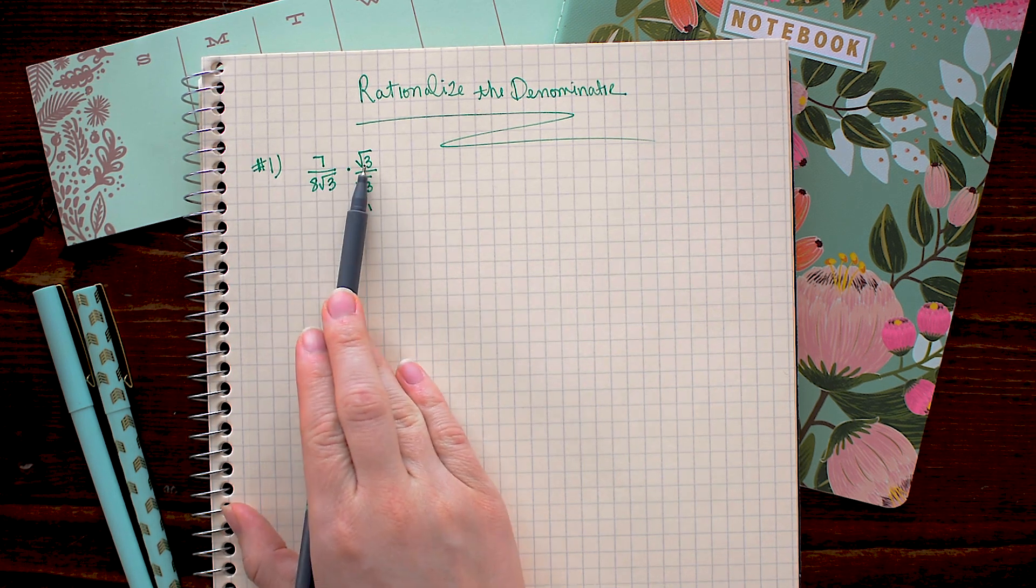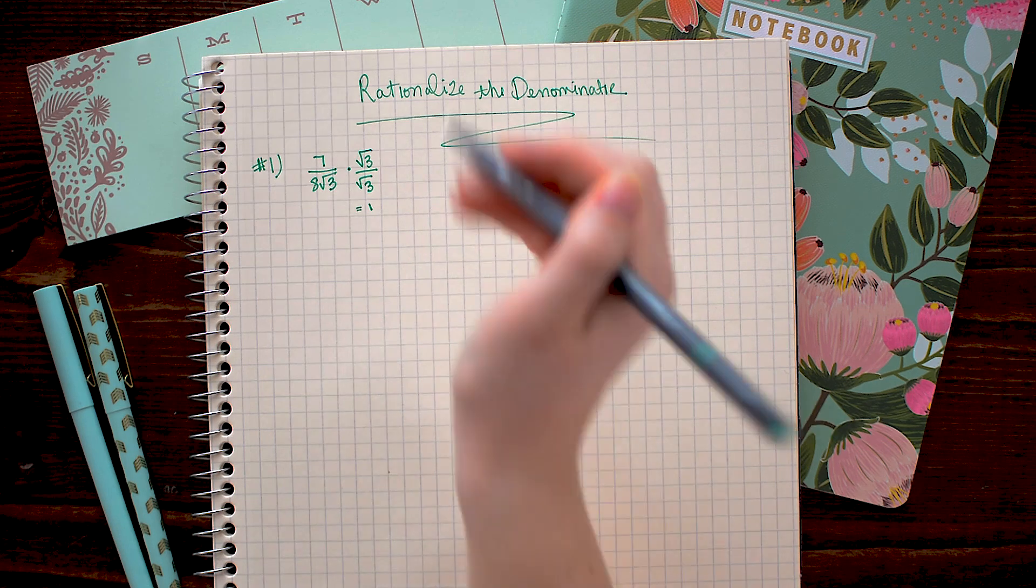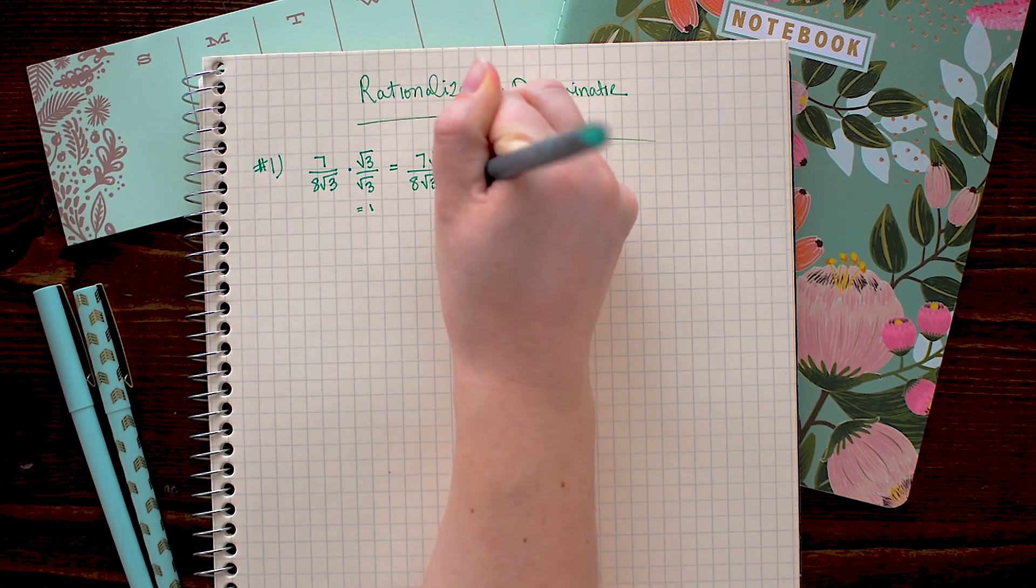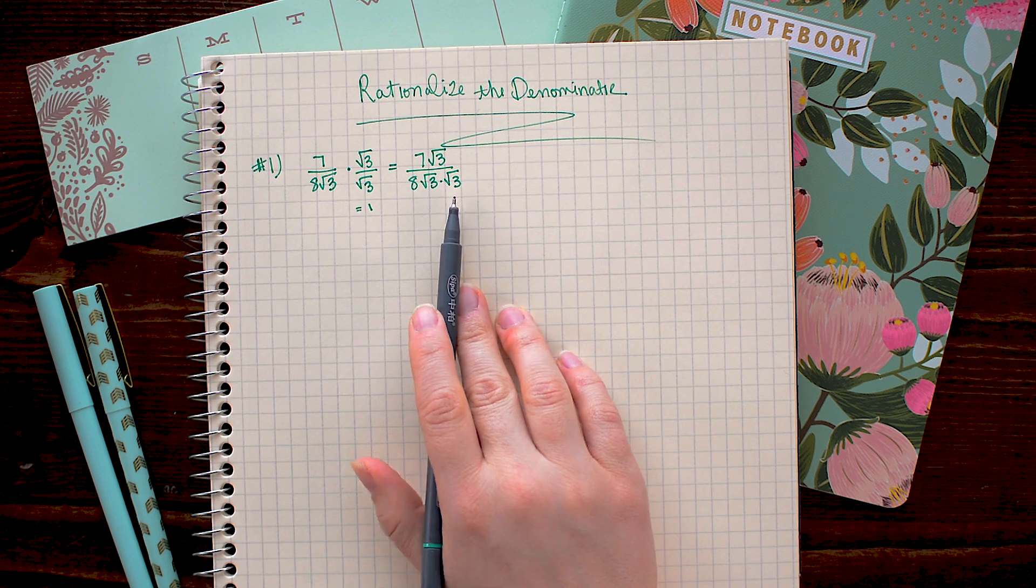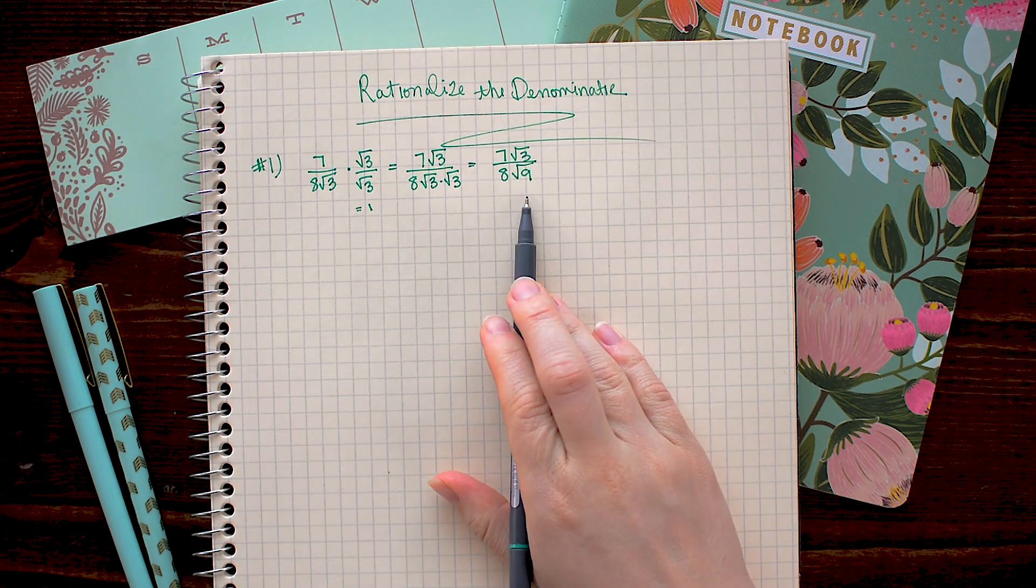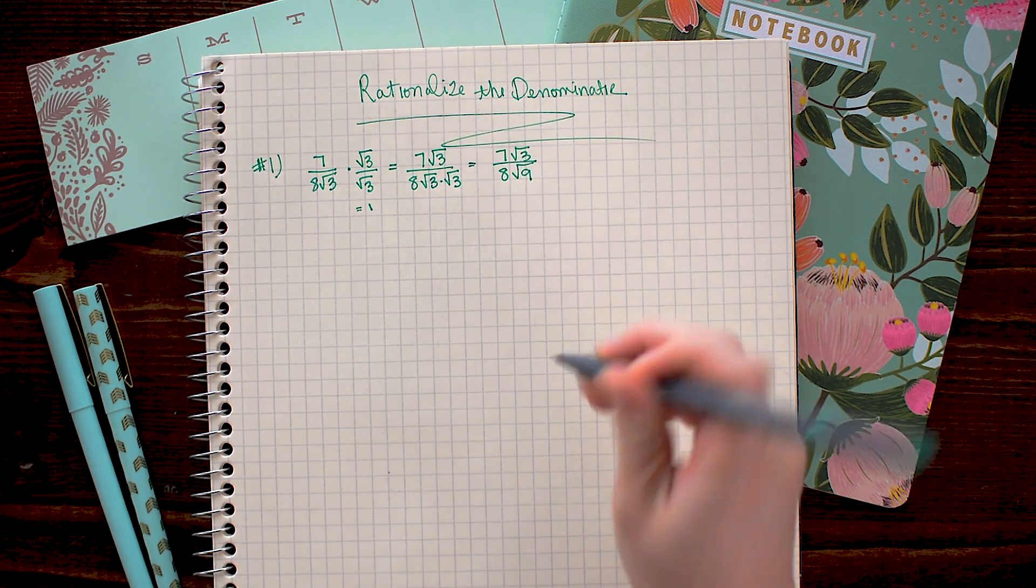I'm going to multiply the numerators together and the denominators together. Now we need to multiply square root 3 times square root 3. And we know that the square root of 9 is simply 3.